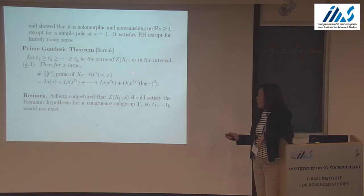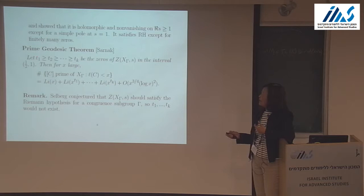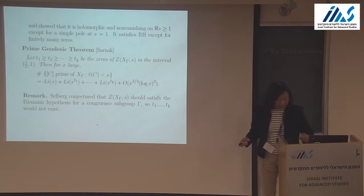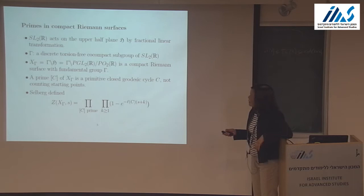I want to remark that Selberg himself conjectured — as Peter also mentioned yesterday — that when Γ is a congruence subgroup, all non-trivial zeros should lie on the line of symmetry s equal to 1/2, so none of the exceptional real zeros should appear.